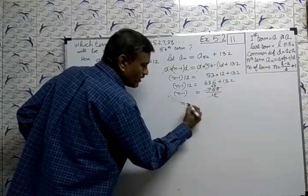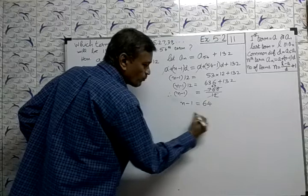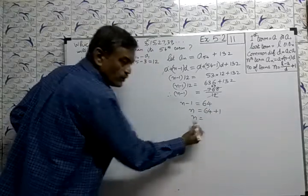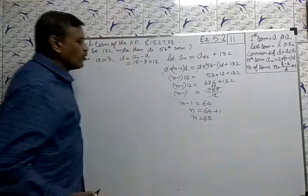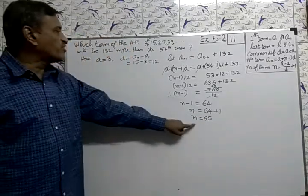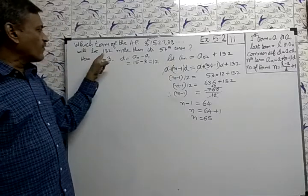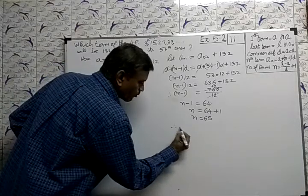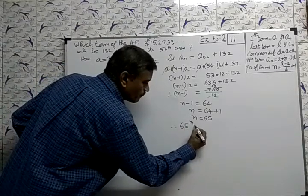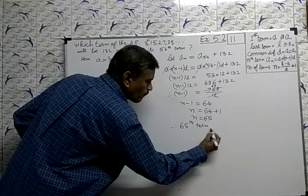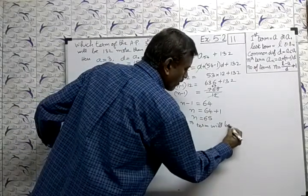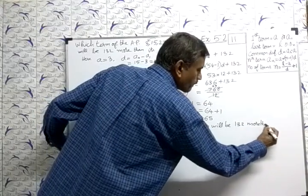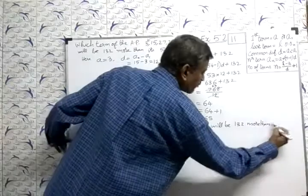So N minus 1 is equal to 64, N equal to 64 plus 1, N equal to 65. Therefore, 65th term will be 132 more than 54th term.